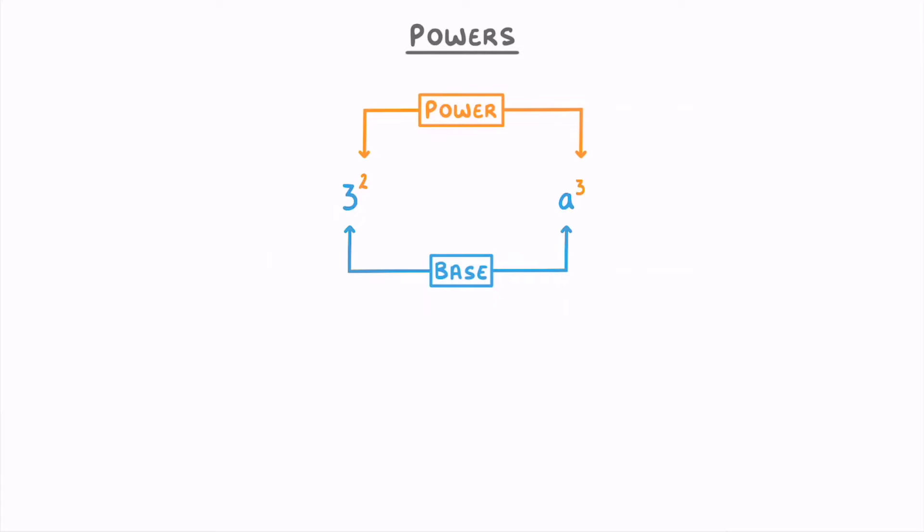You might also sometimes see the power being called the order or the index, but don't worry about this because power, order, and index all mean exactly the same thing. Whatever you call them though, all they do is tell you how many times that base needs to be multiplied by itself.